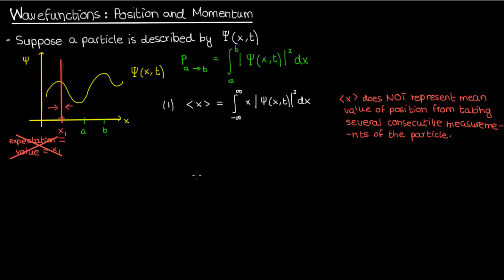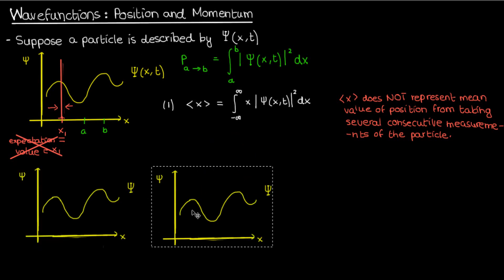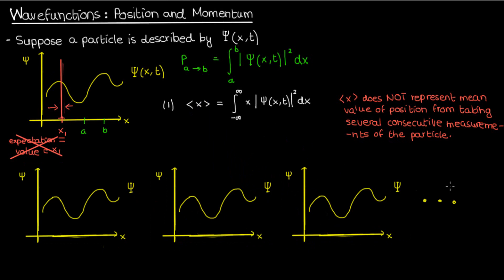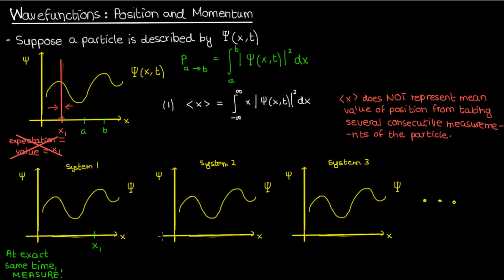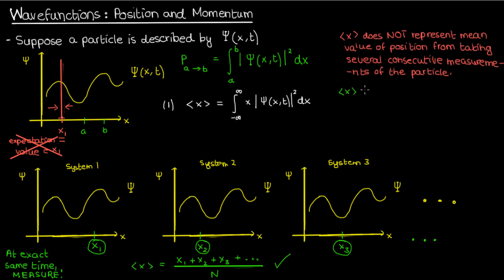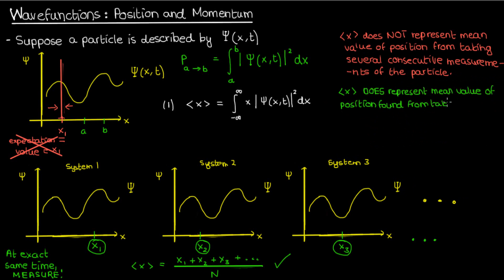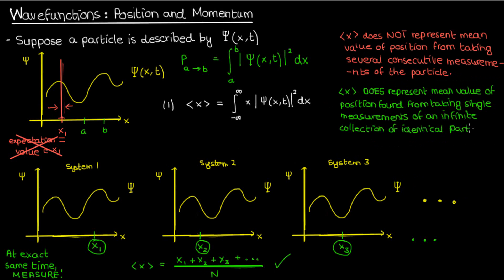So given the inevitability of wave function collapse, how do we determine what the expectation value of position represents? Well, suppose that we take several identical systems that have the exact same wave function psi — system 1, system 2, system 3, and so on. From this collection of identical systems, we then measure the position of the particle in each system at the exact same time. We might get x1 for the first system, x2 for the second, x3 for the third, and so on. If we take all these measurements from these n systems and average them, we'll end up with the expectation value of position. It represents a mean value of position found from taking single measurements of an infinite collection of identical particles, wave functions, or systems.